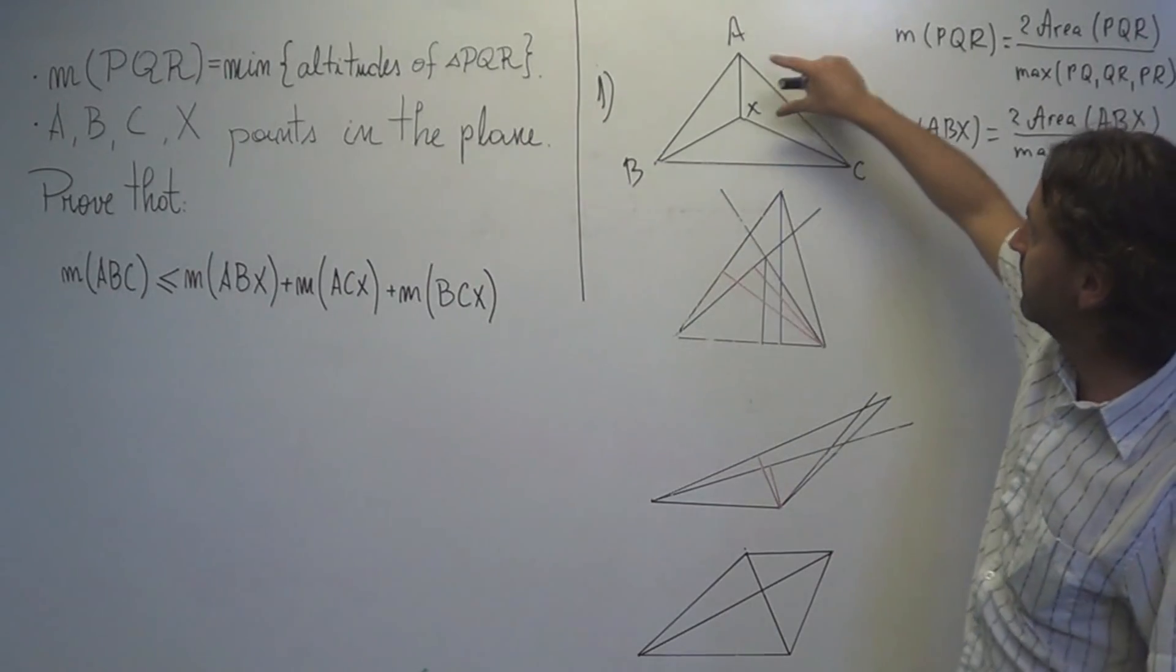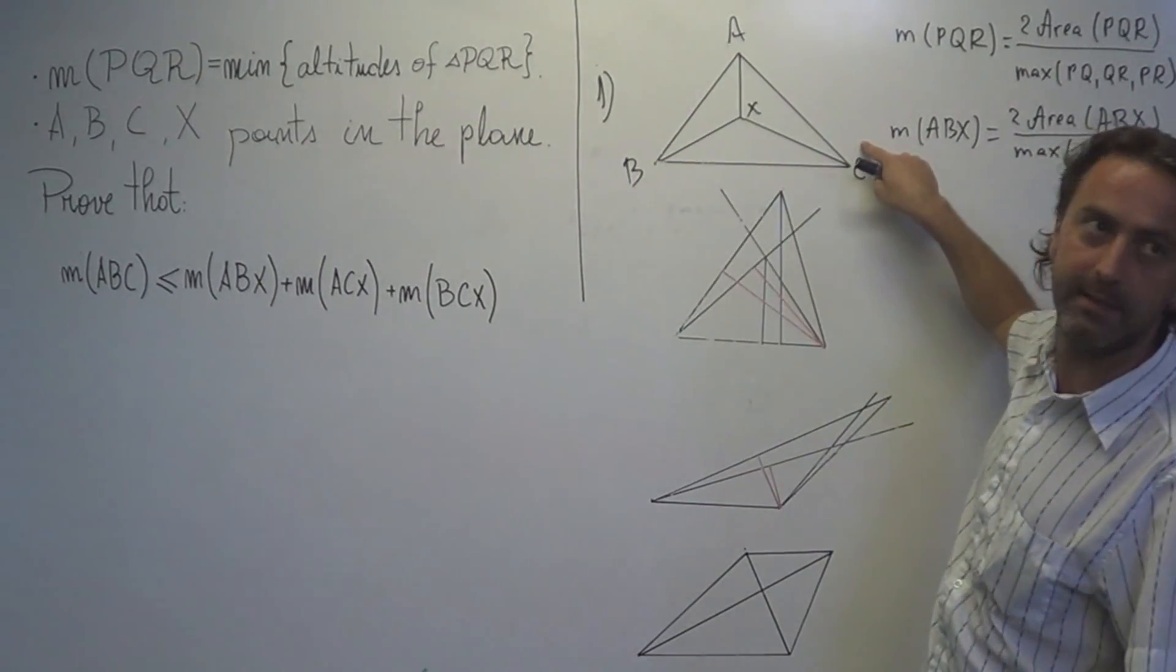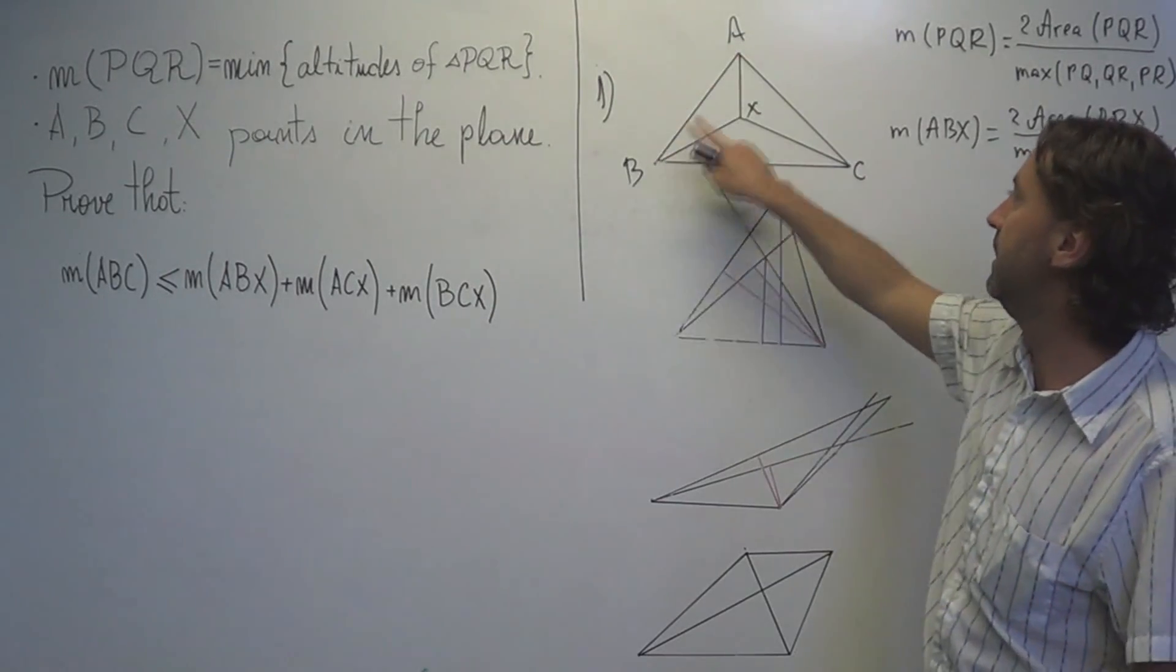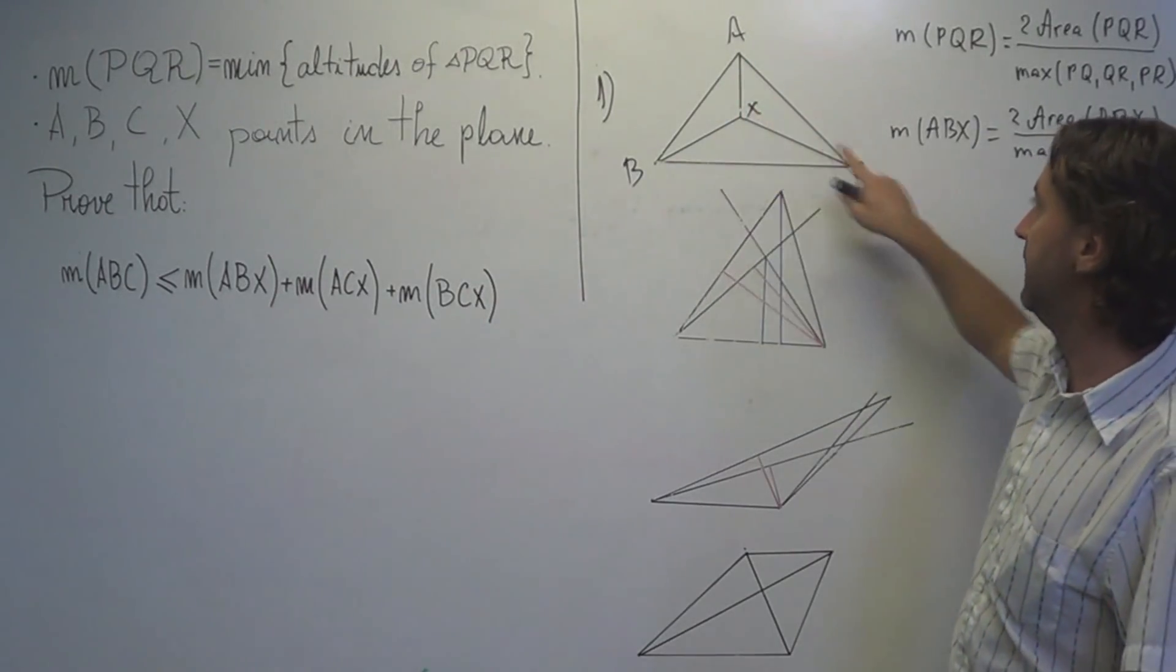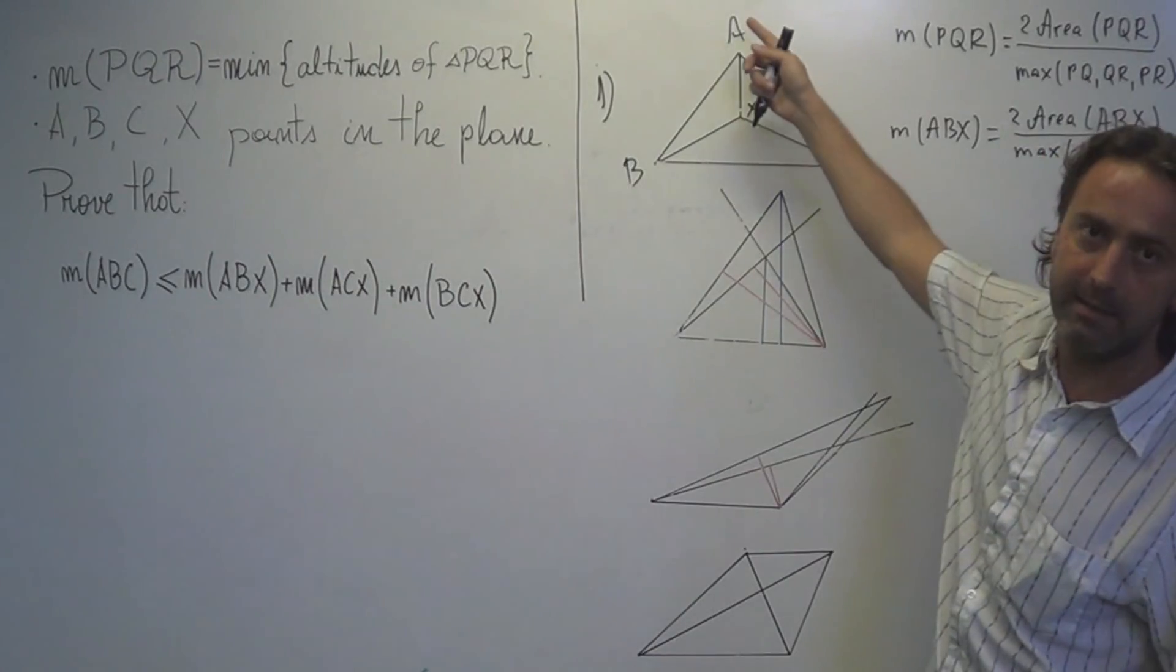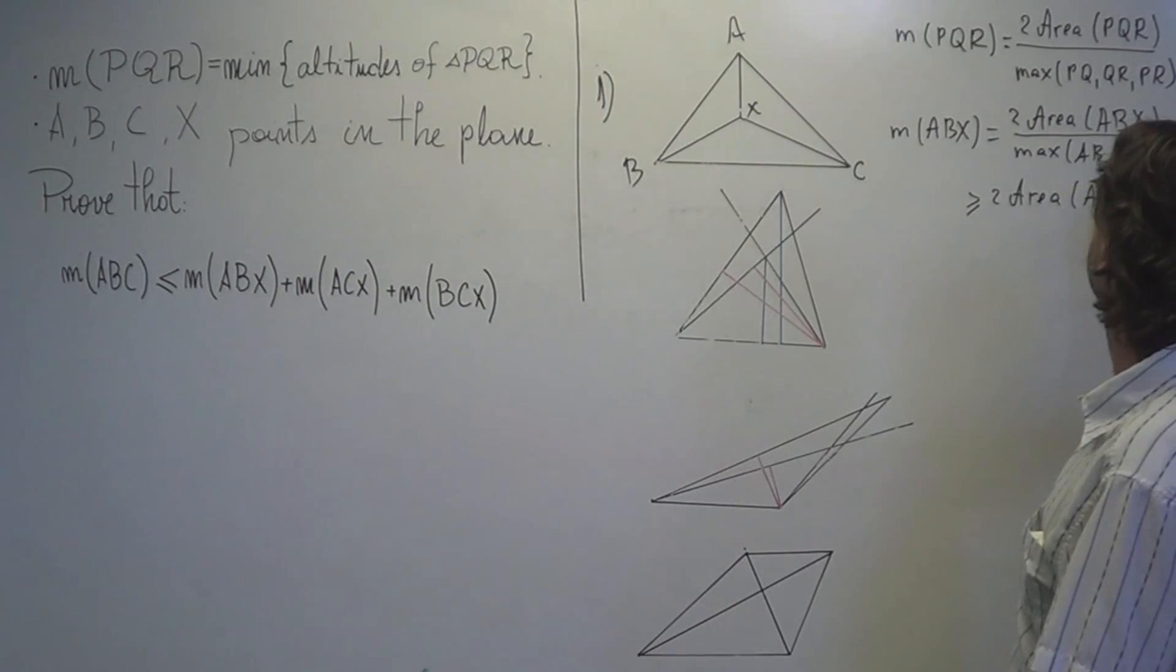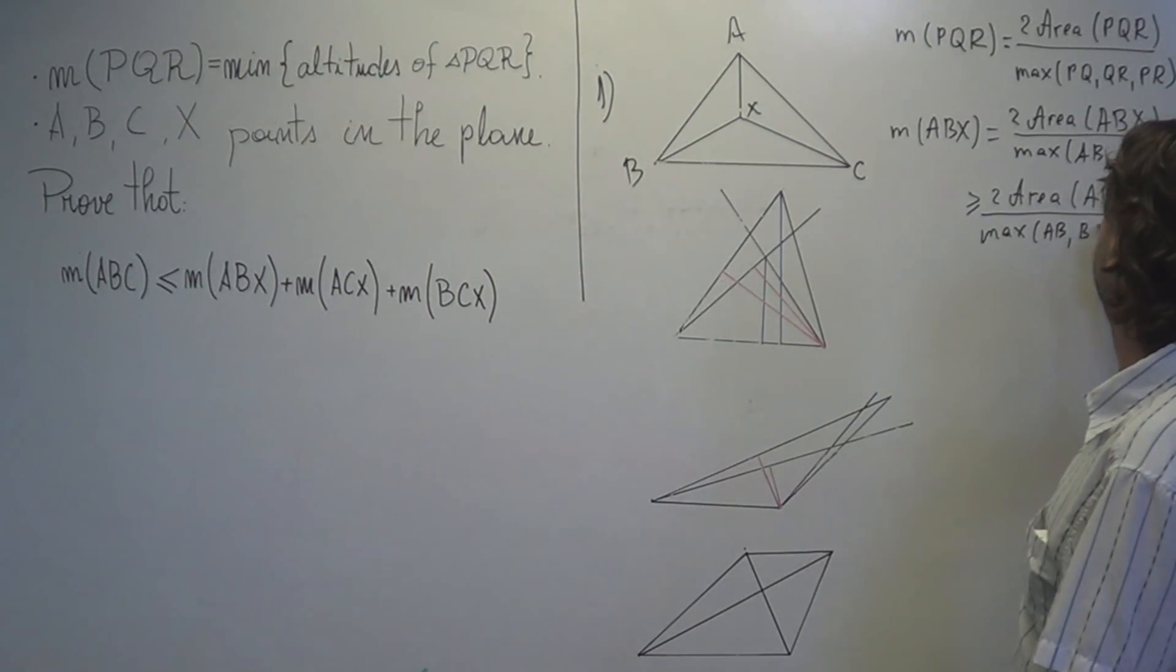But now we make the following remark. AX is always smaller than the maximum of AB and AC, because one of these two angles has to be greater than 90 degrees. And the same is for BX, which is smaller than the maximum of AB and BC, and the same for CX. This means that these sides, AX, BX and CX, are always smaller or equal than the maximum of AB, BC and AC.